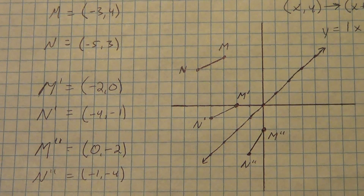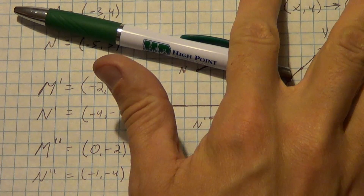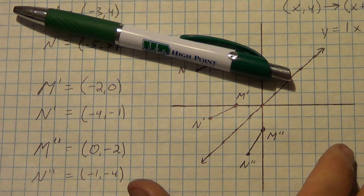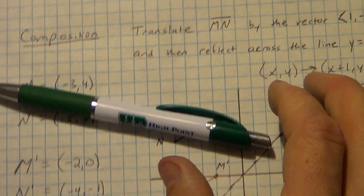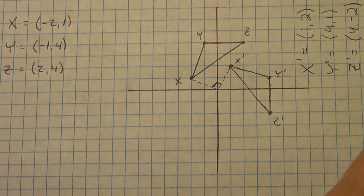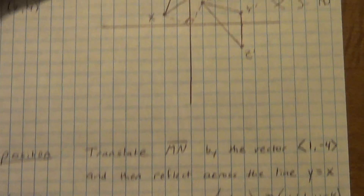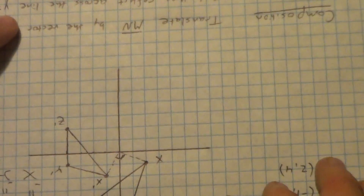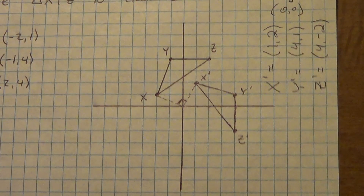So there are some examples of our different transformations. We did a translation, a reflection in the x-axis, a reflection in the y-axis, a reflection in the line y equals x, and a rotation. Remember, for 90 degrees the other way, just turn your paper the other direction and write your points down; for 180 degrees, turn your paper upside down. That's the easiest way to do those rotations. Alright, that's it for lesson 4.9. We'll see you guys in class.